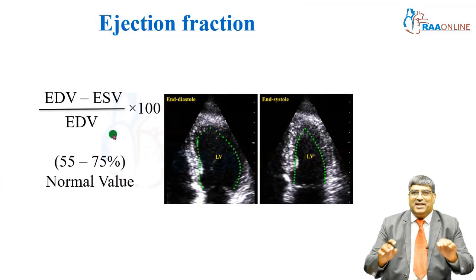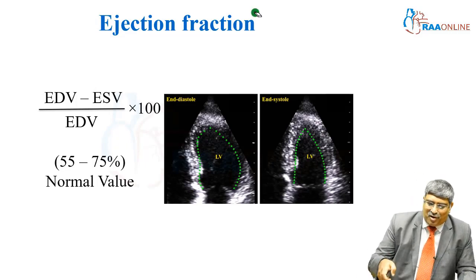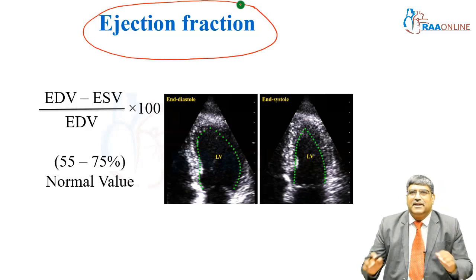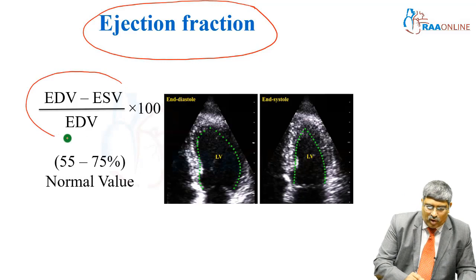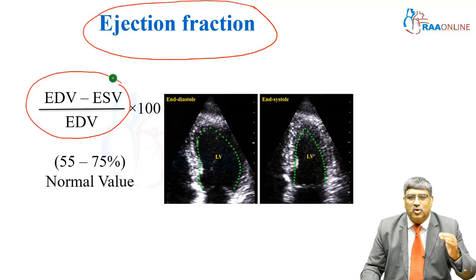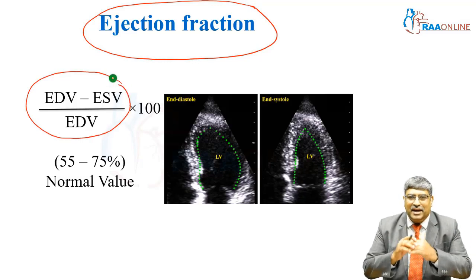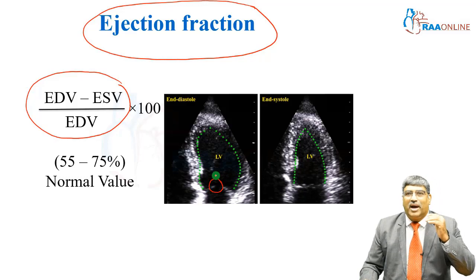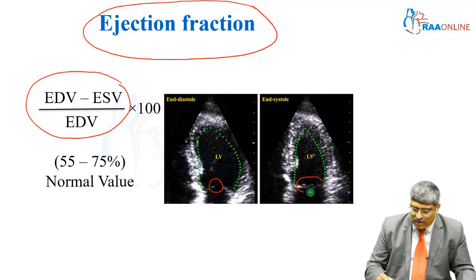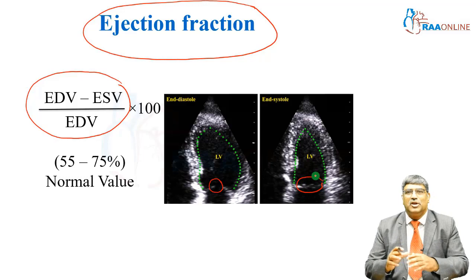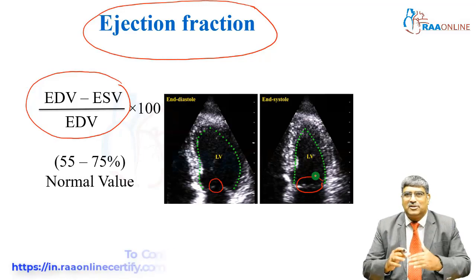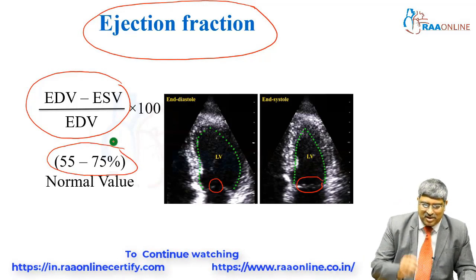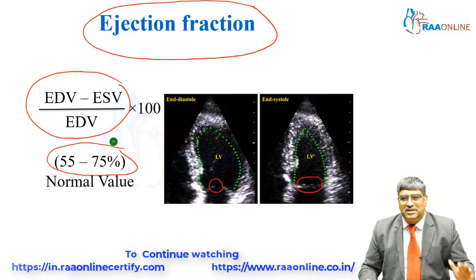Coming to the various parameters in the ECHO report, the first and foremost is the ejection fraction. It is end-diastolic volume minus end-systolic volume (which is the stroke volume) divided by end-diastolic volume. End-diastole is when your mitral valve is open and end-systole is when your mitral valve is closed. You measure the volume by the Simpson method in end-diastole and end-systole and calculate the ejection fraction. The normal ejection fraction is around 55 to 75 percent.